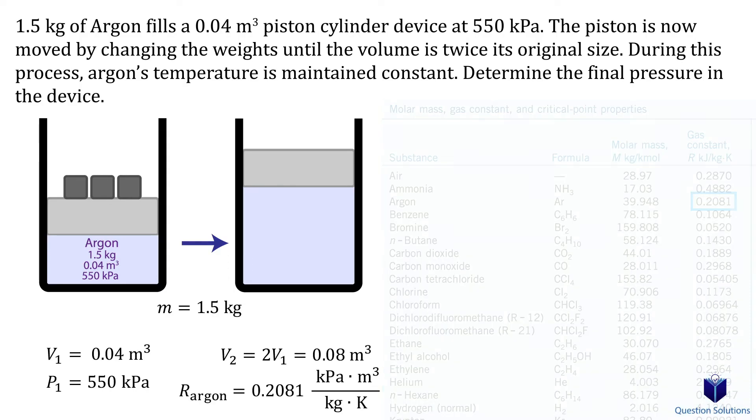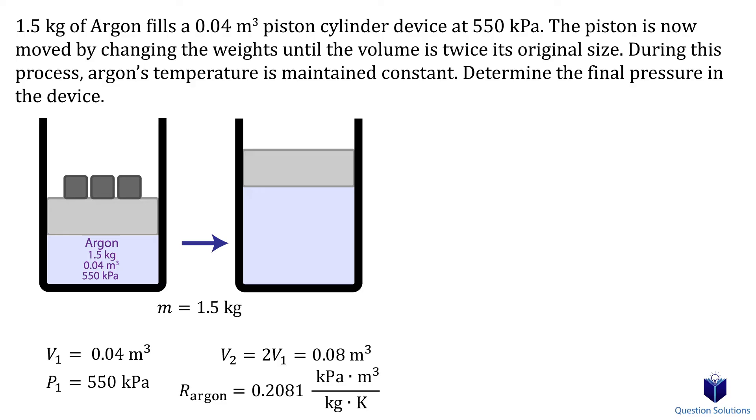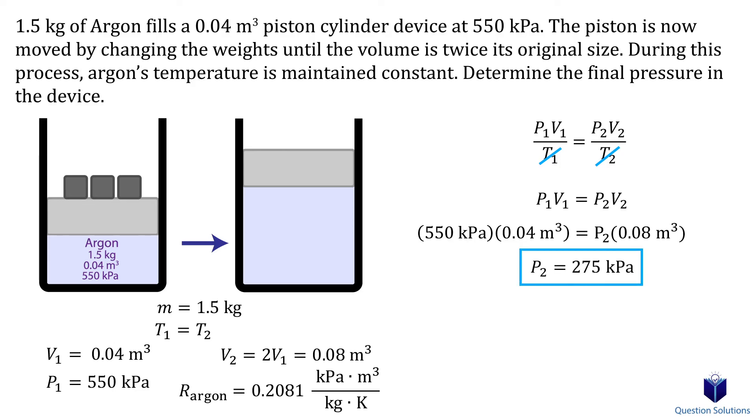Since our problem involves looking at 2 different states, we can use this equation. We are told that the temperature is held constant during the process. So we can eliminate T from the equation. Now we can plug in our values. Let's solve for the final pressure, and that's our answer.